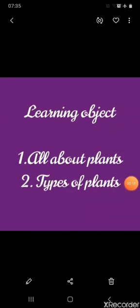We will discuss in this chapter all about plants and types of plants. In the previous classes, we have studied about plants — that is, plants are living things. They cannot move, but they grow, reproduce, and die. So, let's start.